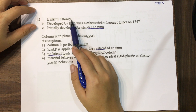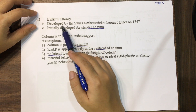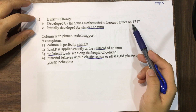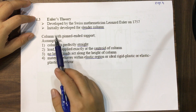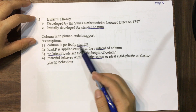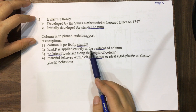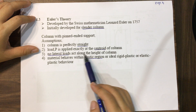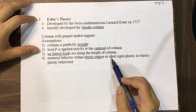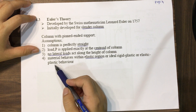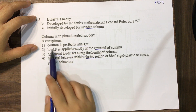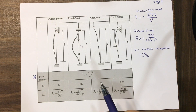Euler theory was developed by Swiss mathematician Leonard Euler in 1757, initially developed for slender columns with pin-pin support. The four assumptions are: the column is perfectly straight, P is applied exactly at the centroid, there is no lateral load along the height of the column, and the material behaves within the elastic region.